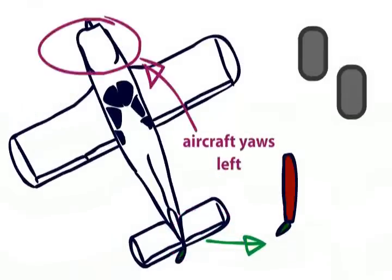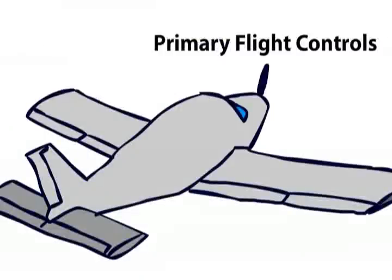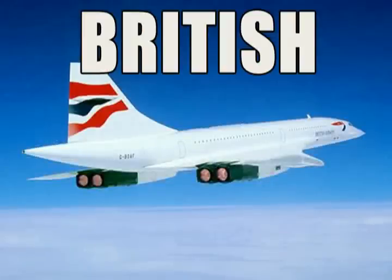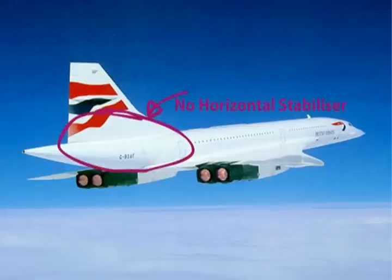You can also have different setups with the primary flight controls where one surface can combine two of the above. A good example of this is Concorde, the finest aircraft ever constructed, mainly because it was British. You can see it has no horizontal stabilizer, so there is nowhere for an elevator.